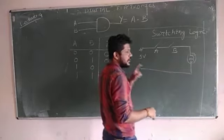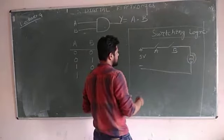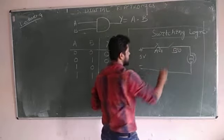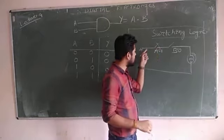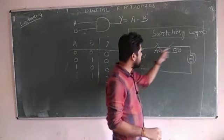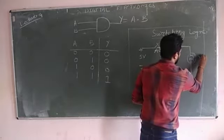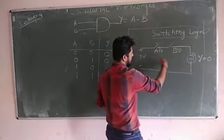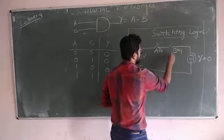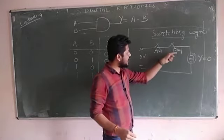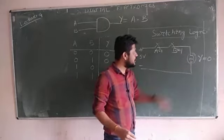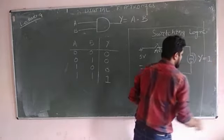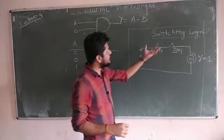Switch ON means in digital logic 1. Suppose A equals 1 and B equals 0 — this switch is ON but B equals 0 means this switch is OFF, so there is no current flow and the bulb will be at OFF condition. When both switches are ON, that means A equals 1 and B equals 1, then only current will flow through the path and reach the bulb, so Y equals 1. In this way we can implement AND logic using switching.